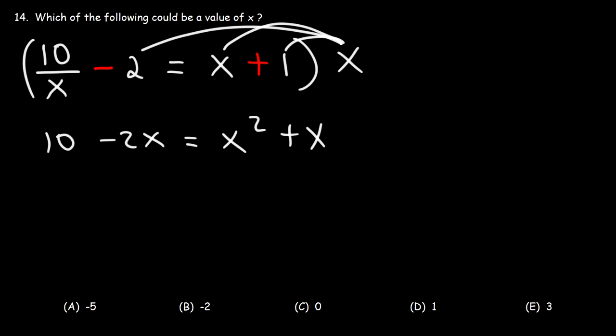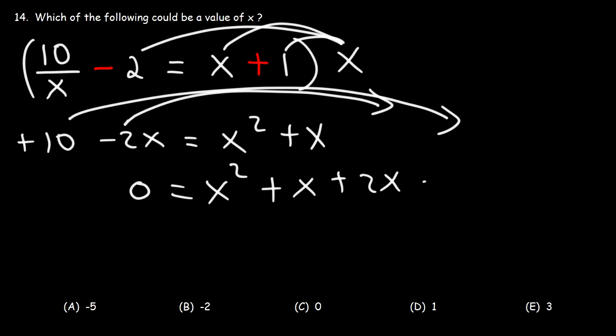Now let's take everything from the left side and move it to the right side. As we move negative 2x to the right side, it's going to change from negative 2x to positive 2x. And as we move positive 10 from the left to the right side, it's going to become negative 10.